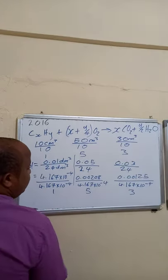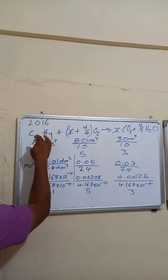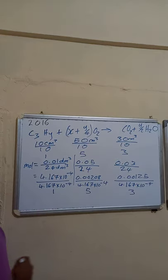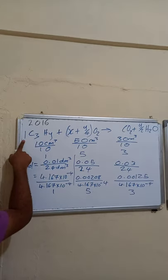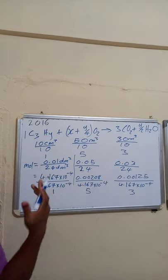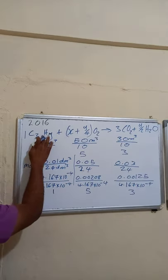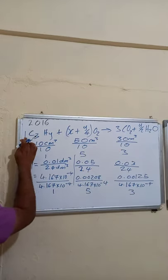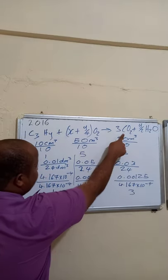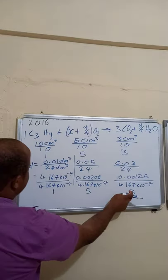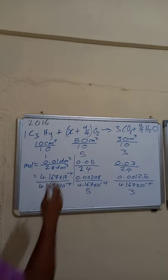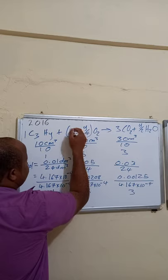From the ratio, 1 mole of the hydrocarbon produces 3 moles of CO₂. That means the hydrocarbon must contain 3 carbon atoms, so X = 3.